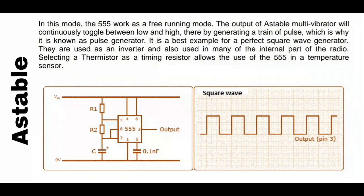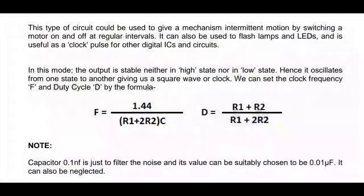VCC is plus 5V and 0V is minus 5V. You can connect a battery here and make your circuit as per your demand. The output is at pin 3. There is a capacitor of 0.1 nanofarad — it may be neglected or a 0.01 microfarad may be used — it is only used to reduce oscillation and harmonics.